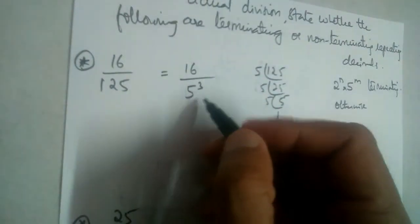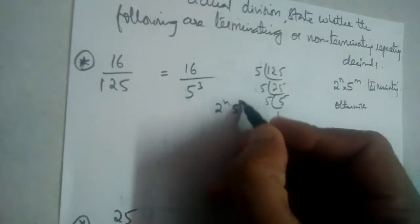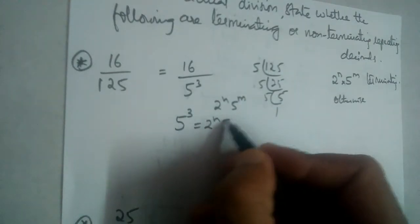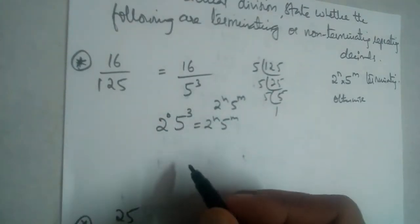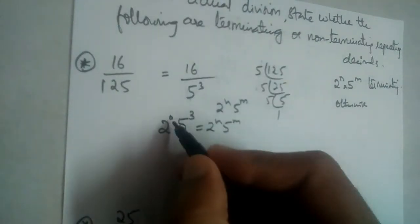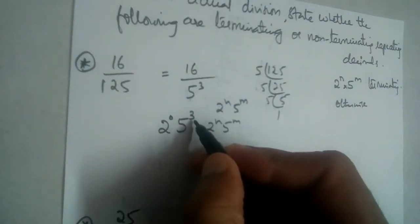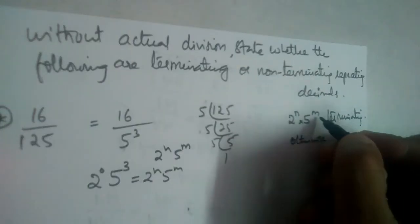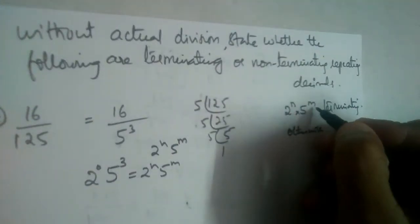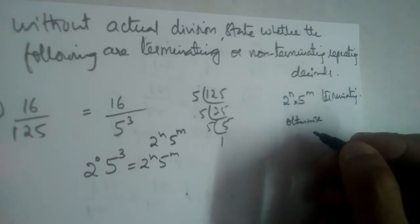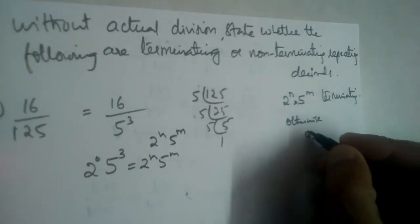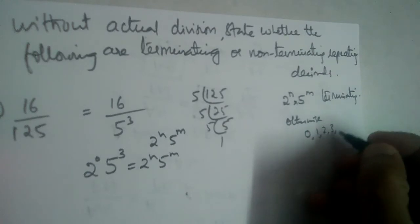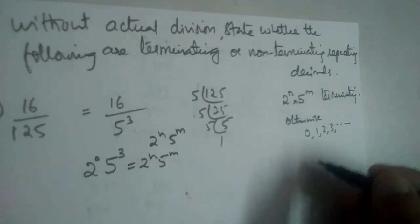So denominator is in the form of 2 power n, 5 power m. Now you must be confused—there is no 2 power n here, right? See, 2 power 0 is there. n is equal to 0 and m is 3. Here, 2 power n, 5 power m, n and m are non-negative integers. That means n can be 0 or m can be 0. It can be 1, 2, 3, 4, and so on.